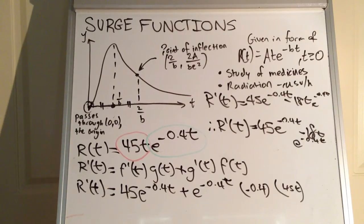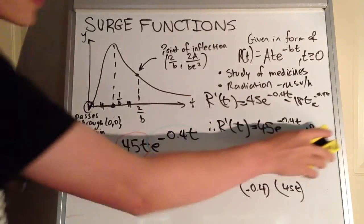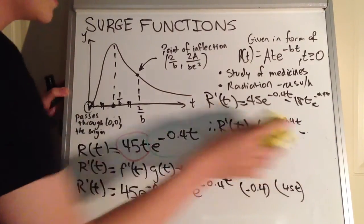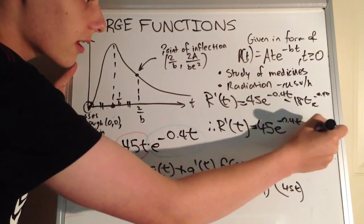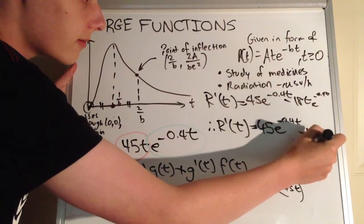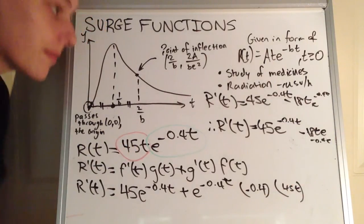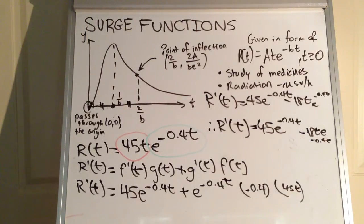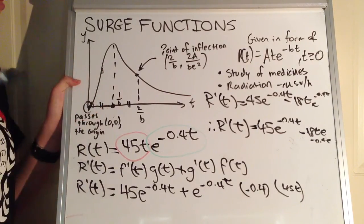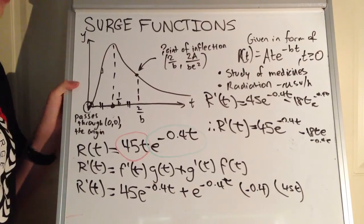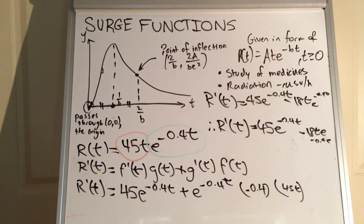Now we need to understand what the derivative means in context. It means this is the rate of change per hour at a given point on the function. If we evaluate it at a specific point, we can see if the radiation is increasing or decreasing. It's the rate of change in the radiation level — that's the contextual explanation of the derivative.